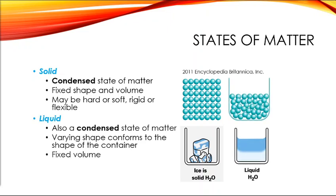One thing that's very easily overlooked: liquid is also considered a condensed state of matter. It is not nearly as condensed as a solid, and the atoms are not in fixed positions, but it is still condensed because all atoms are touching other atoms. The main difference between a solid and a liquid is that atoms in a liquid are able to move around — up, over, under, and around all other atoms.